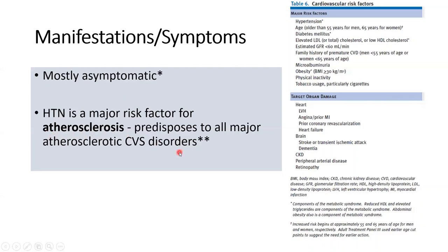Hypertension through its atherosclerotic mechanism causes all sorts of organ damage. Essential hypertension is a silent morbidity and mortality maker — silent because it is mostly asymptomatic itself, and it expresses itself through atherosclerosis on various crucial organs of the body.